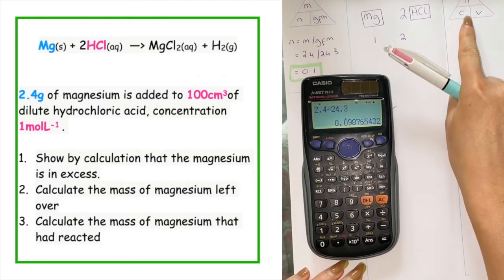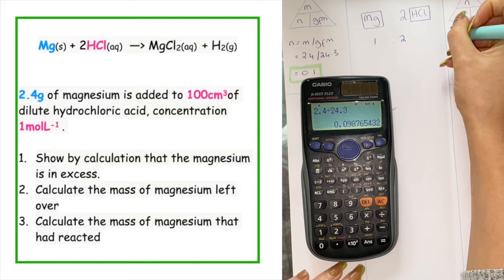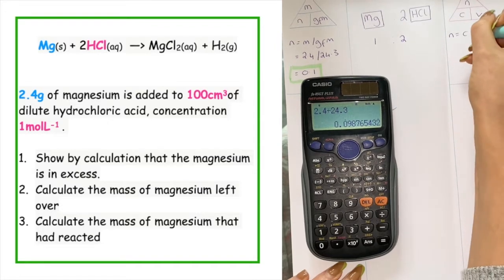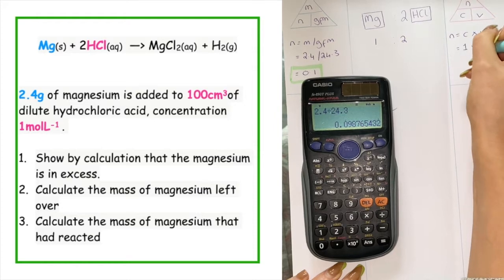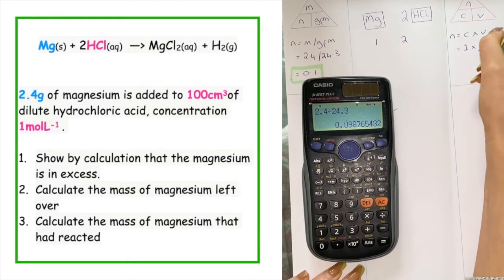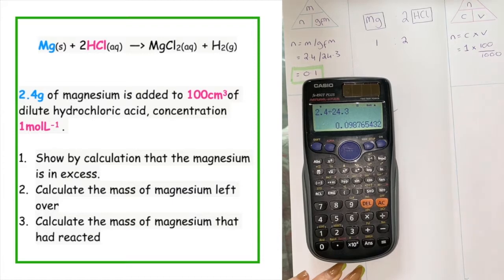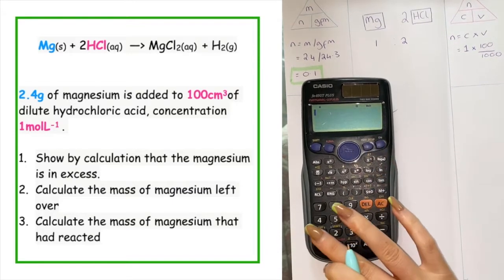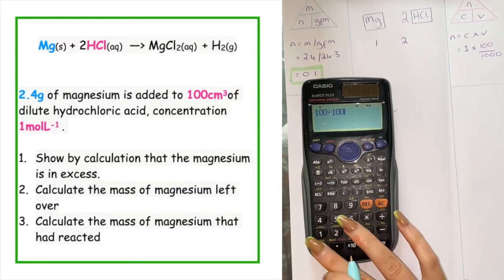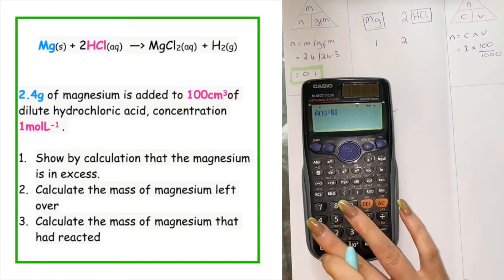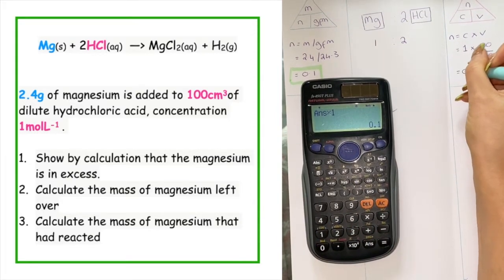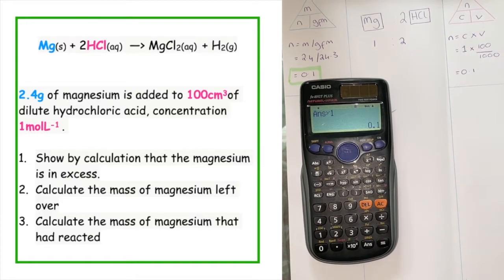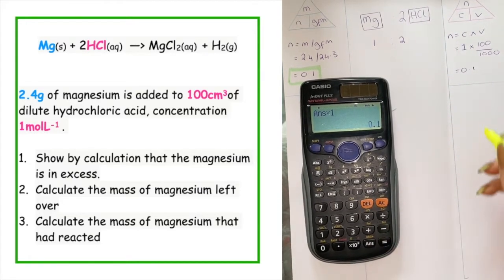This time I'm going to use my NCV triangle. N is equal to concentration times volume. The concentration is 1, times by 100 divided by 1000. Remember, we always want to use our volume in litres. 100 divided by 1000, then times by 1, gives me the number of moles as 0.1. So we can see we have the same number of actual moles of each of our reactants.